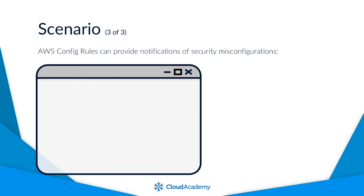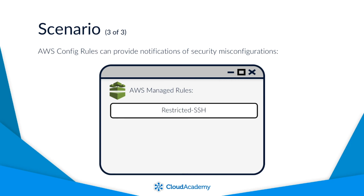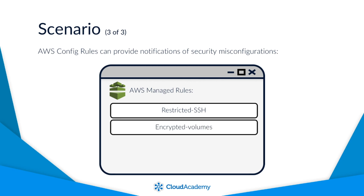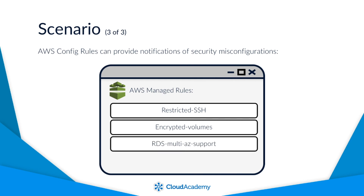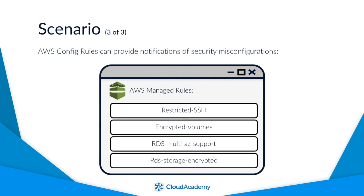AWS Config rules can notify you of these security misconfigurations. If during deployment we activated the following AWS managed rules — Restricted SSH, which would check whether security groups disallow incoming SSH traffic; Encrypted Volumes, which would check whether EBS volumes are encrypted; RDS Multi-AZ Support, which checks to ensure high availability is configured for your RDS instance; and RDS Storage Encrypted, which checks if storage encryption is enabled for your RDS instances — then a notification would have been sent to the configuration stream stating that a resource had changed its state from being compliant to non-compliant. These notifications could have been configured programmatically to notify your security team, who could have then investigated as to why this had happened, and understood who made the change through the use of the configuration item by utilising the CloudTrail information recorded when the change happened to the resource.